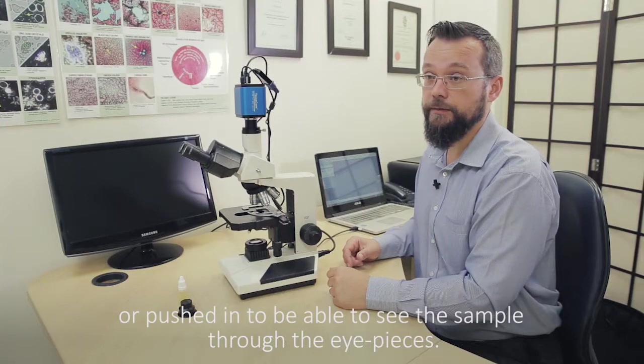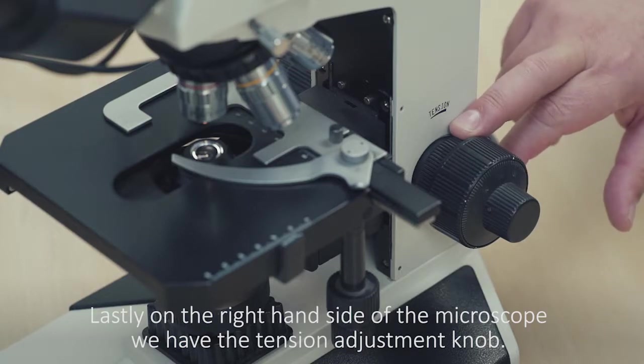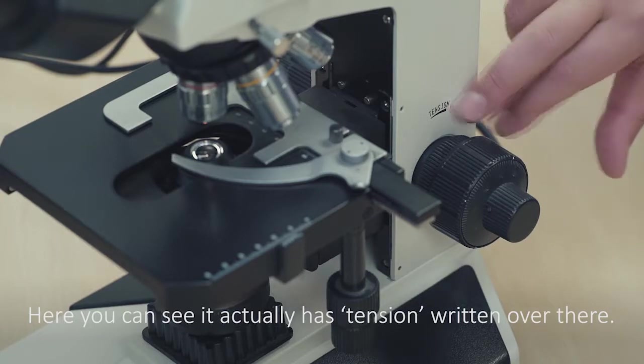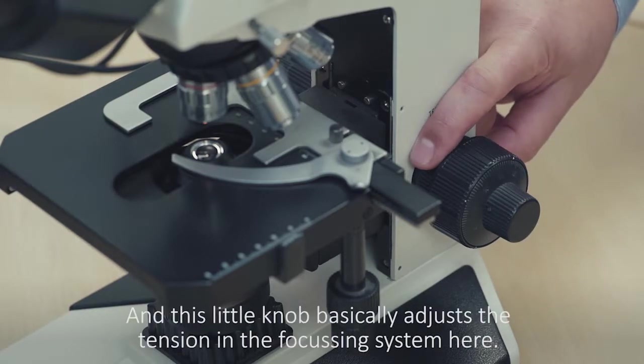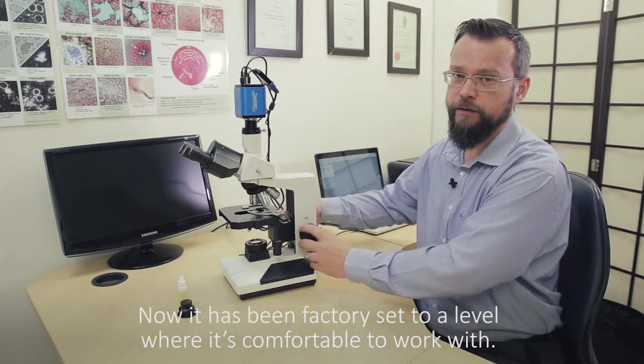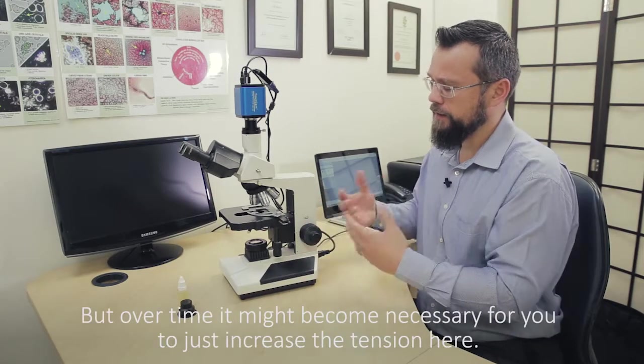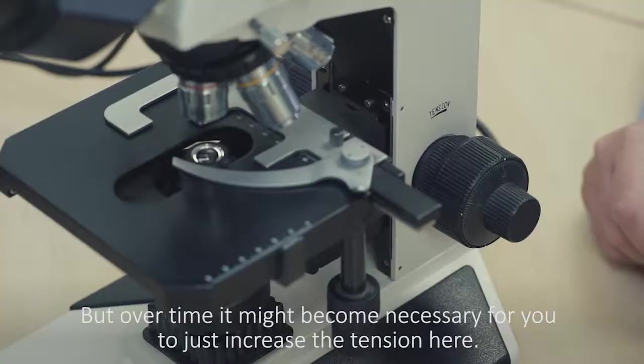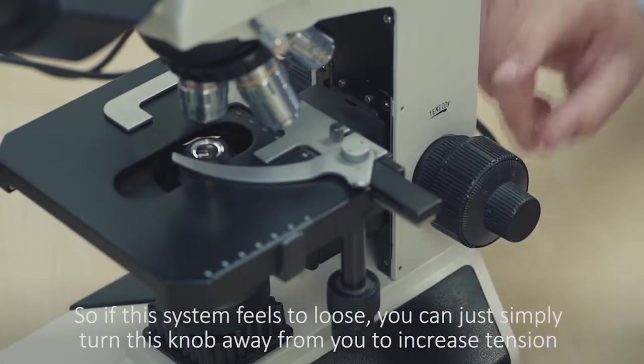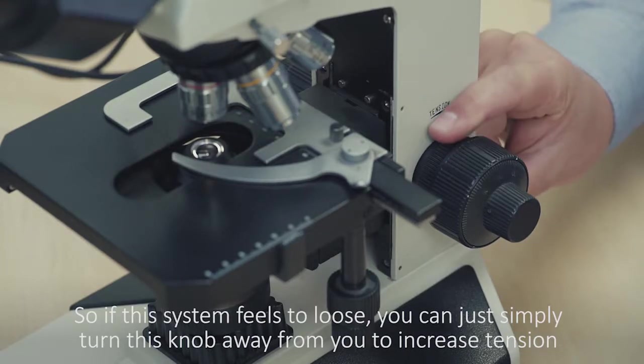Lastly on the right hand side of the microscope, we have the tension adjustment knob. This is just on the inside of the coarse focus knob here. You can see it actually has tension written over there. This little knob basically adjusts the tension in the focusing system. It has been factory set to a level where it's comfortable to work with while maintaining the level of focus. But over time it might become necessary for you to increase the tension here if this system feels too loose. You can simply turn this knob away from you to increase tension or towards you to reduce the tension.